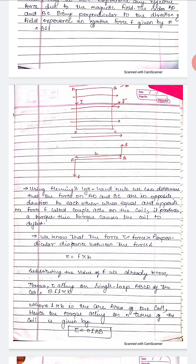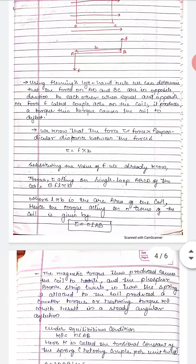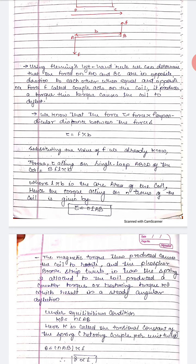This torque causes the coil to deflect. We know that torque τ = force × perpendicular distance between the forces. Substituting the value of F = Bil, we get τ = Bil × b, where l × b is the area of the coil. Hence, for n turns, the torque is τ = nIAB.